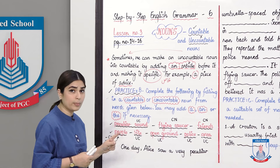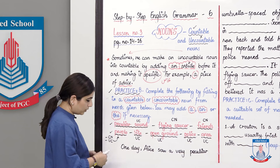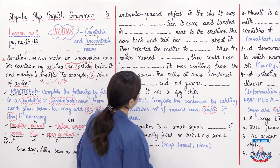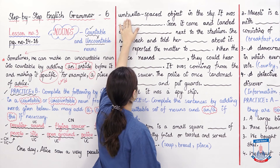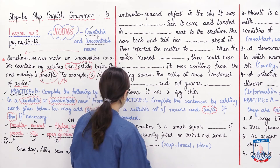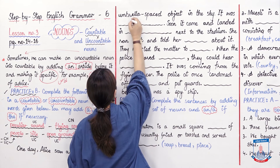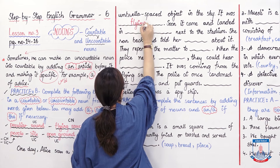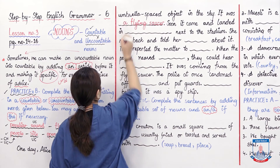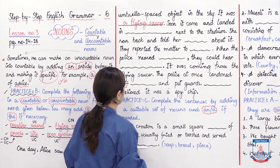Now let's read the text in the book and see where each countable and uncountable noun fits, and where articles are needed. 'One day Alice saw a very peculiar umbrella-shaped object in the sky.' It was — choose from the words — 'a flying saucer.' Since there was only one, we use the article 'a': a flying saucer.